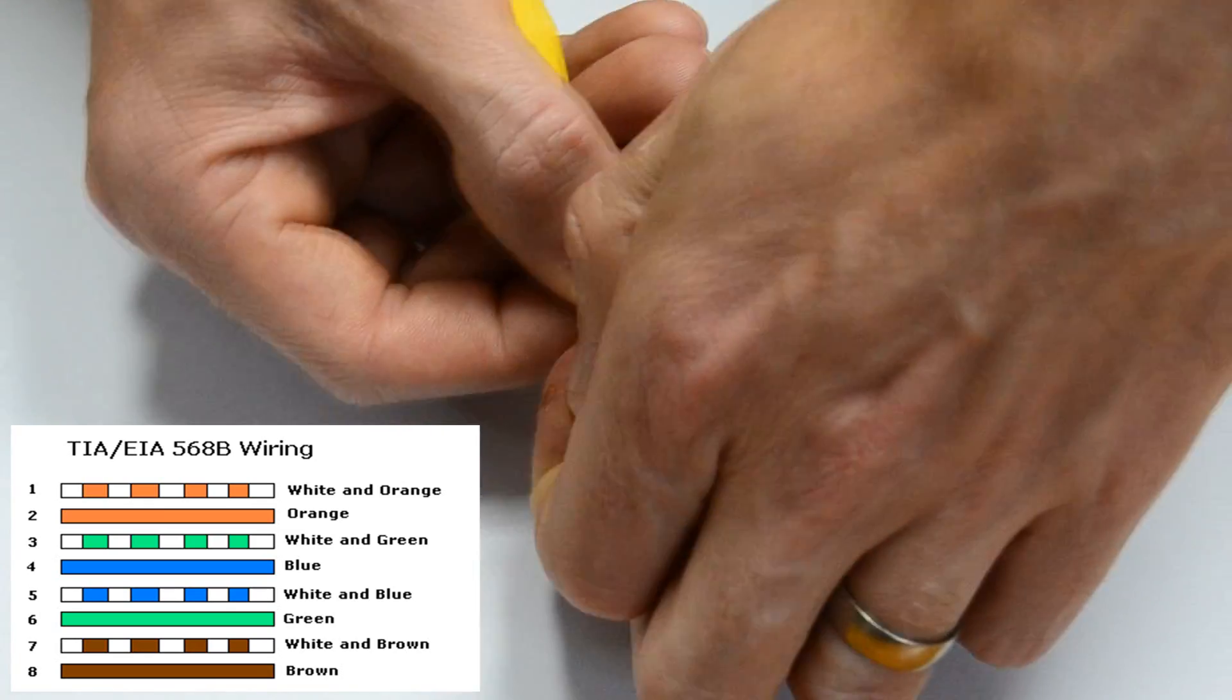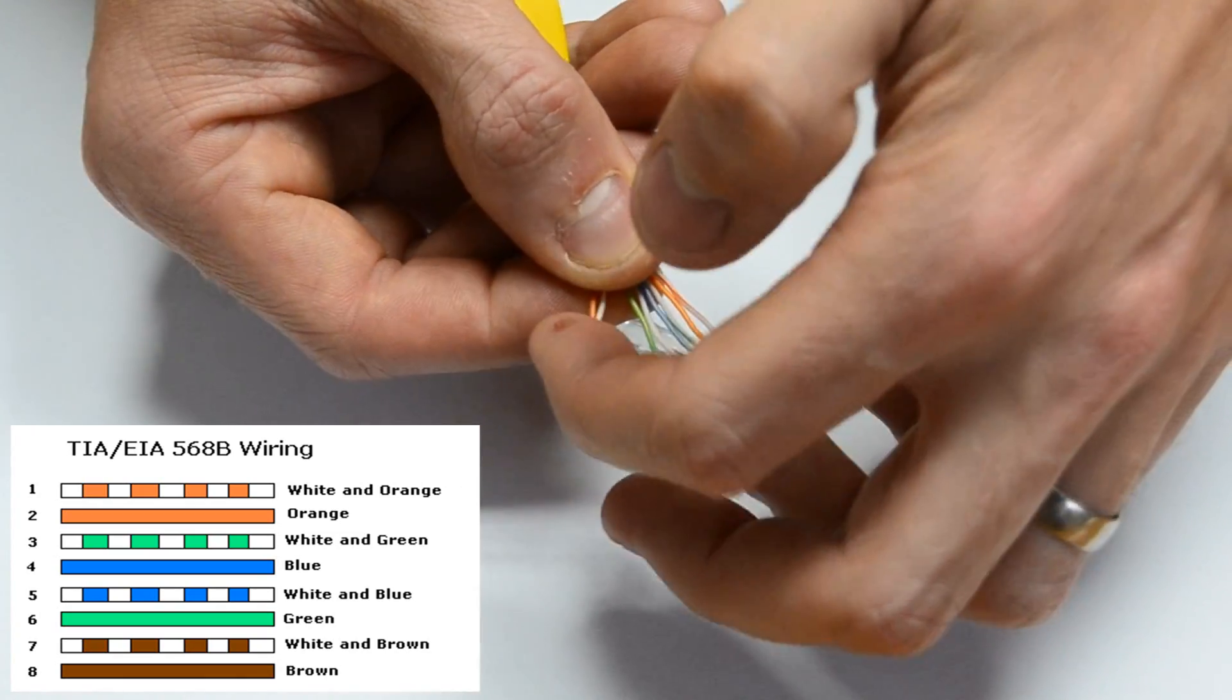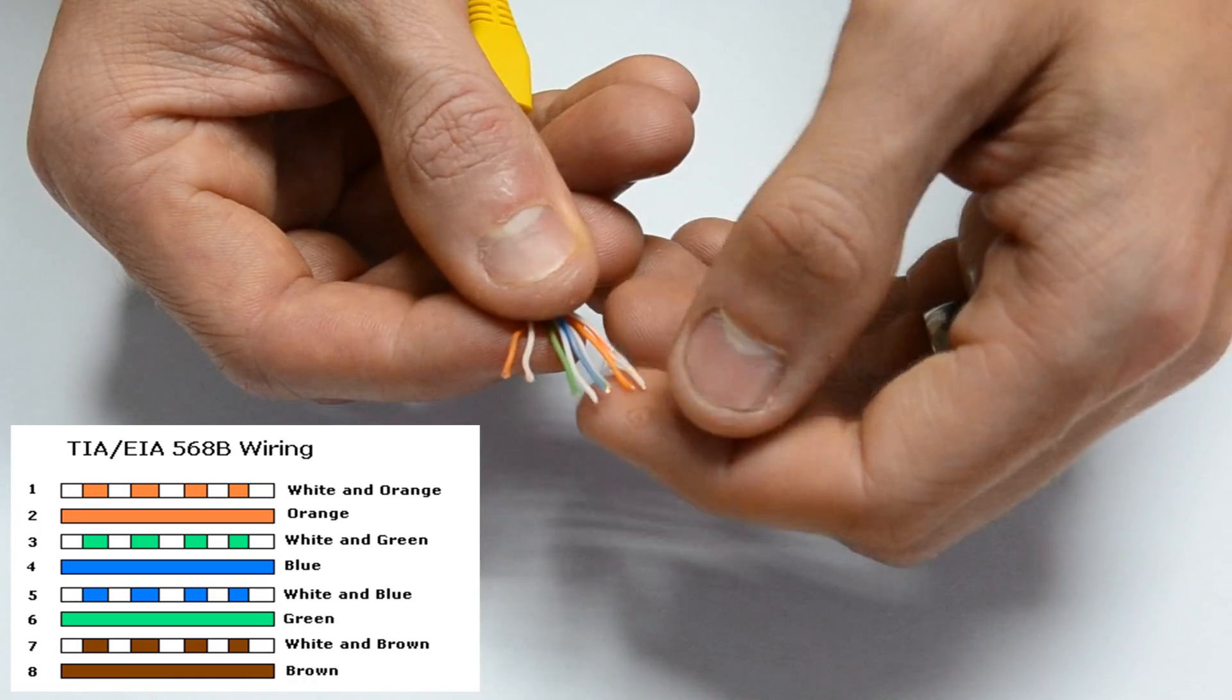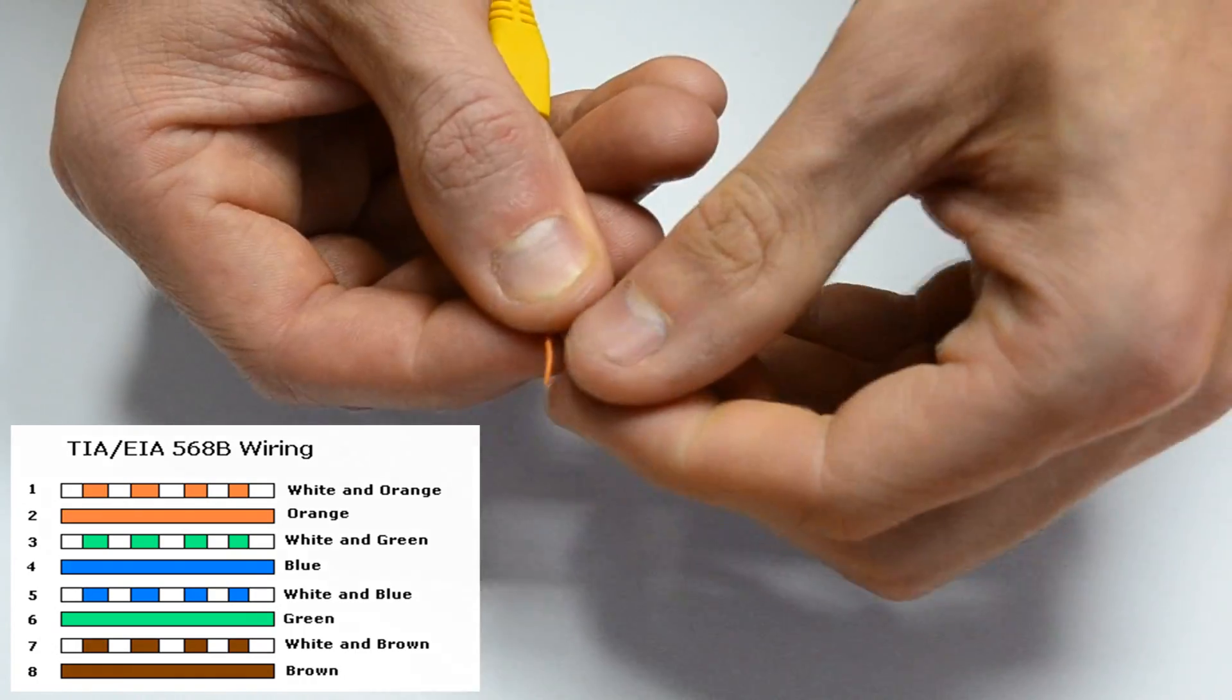The cables will always alternate as well between a striped cable, so either a white and orange, and a solid color. So that's sort of the easiest way to remember how to wire these connections.